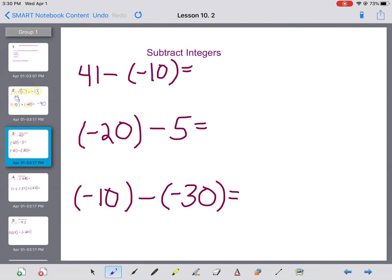All right. Subtracting integers gets a little bit more fancy. So here we have 41 subtract negative 10. When you subtract integers, you can add the opposite. So I do leave, leave the first number the same, switch to addition, and then I switch negative 10 to positive 10. So I end up with 41 plus 10. Very straightforward. My answer is 51.